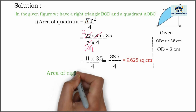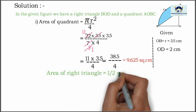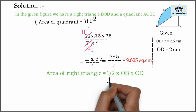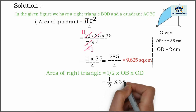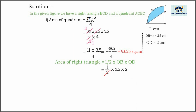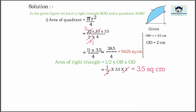Now we will find area of the right triangle, which is equal to half into base into height, that is, half into OB into OD. Substituting: half into OB is 3.5, into OD is 2. The 2s cancel, giving 3.5 square centimeter.